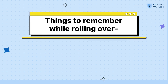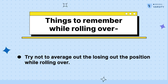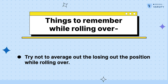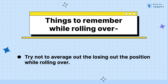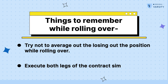A few last things before we end this video. When rolling over, traders often get over-ambitious and add more lots, especially when the initial position is making a loss, with a hope that they can average out the loss. Do not do this — averaging out on a loss-making position is a very bad idea. Another mistake that traders often do while rolling over their position is to close their first leg of the trade but take time to initiate the second leg. Do not do this. If you intend to roll over, then execute both legs of the trade simultaneously.